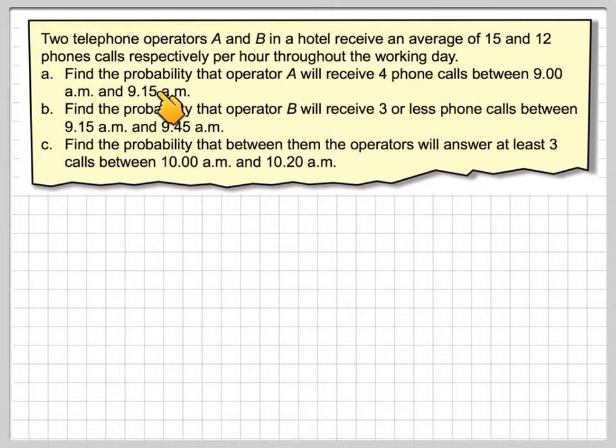The time interval in the first part is 15 minutes, the time interval in the second part is 30 minutes, and the time interval in part C is 20 minutes. We've got averages per hour, so per 60 minutes.